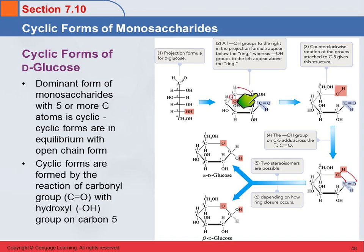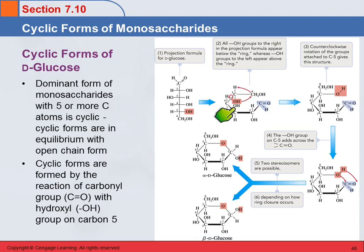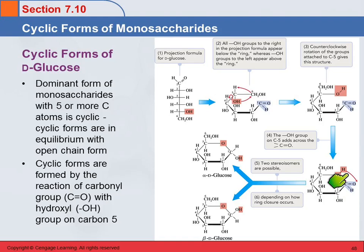This group is going to move up — this whole thing can rotate around this single bond, just twisting. So from here to here, we're twisting around so that now this OH is up here, this group is up on top, and the hydrogen's on the bottom. This hydroxyl group is then going to add to the carbon over here, bonding to the carbon.